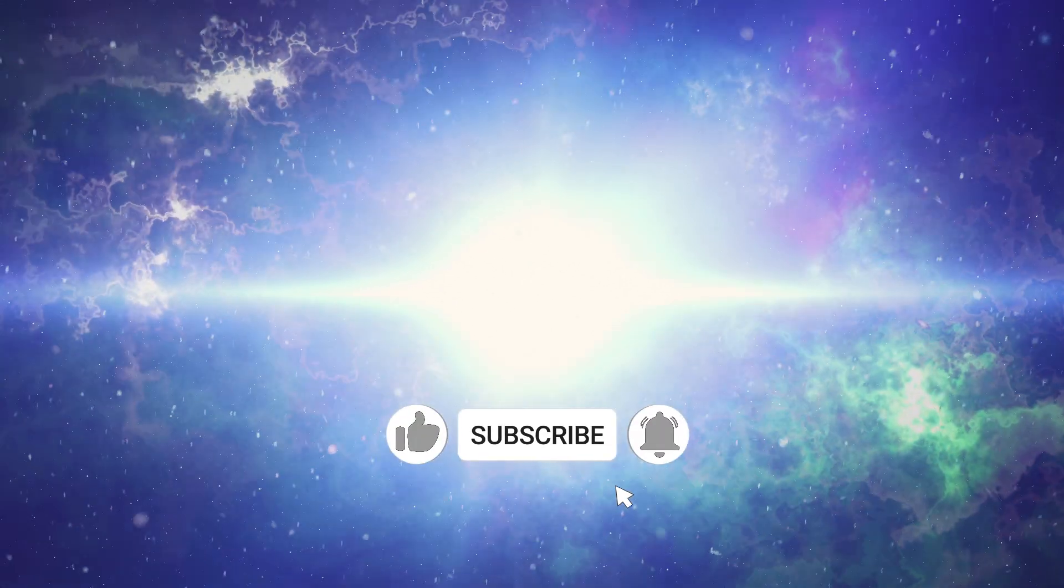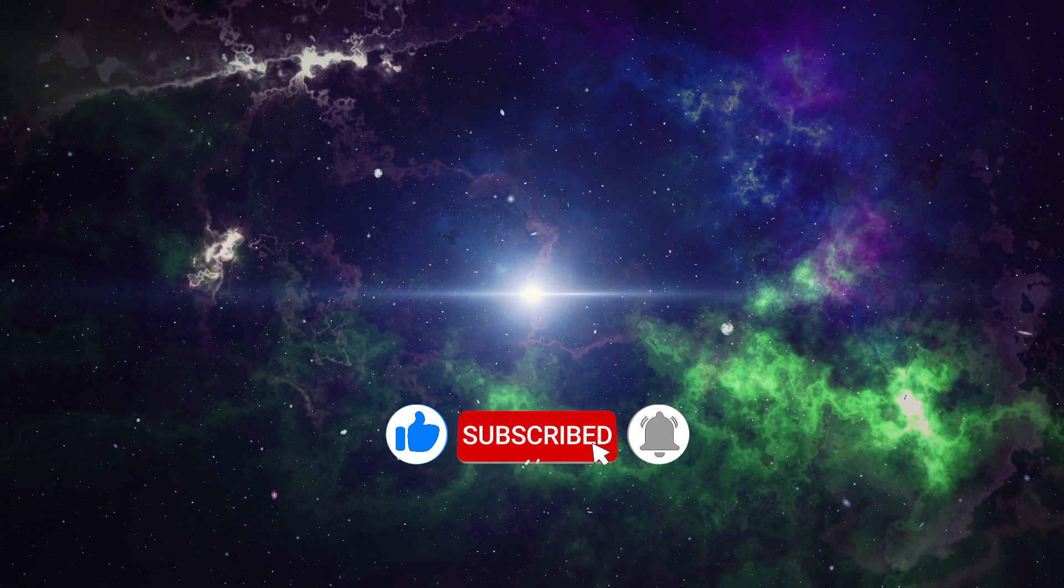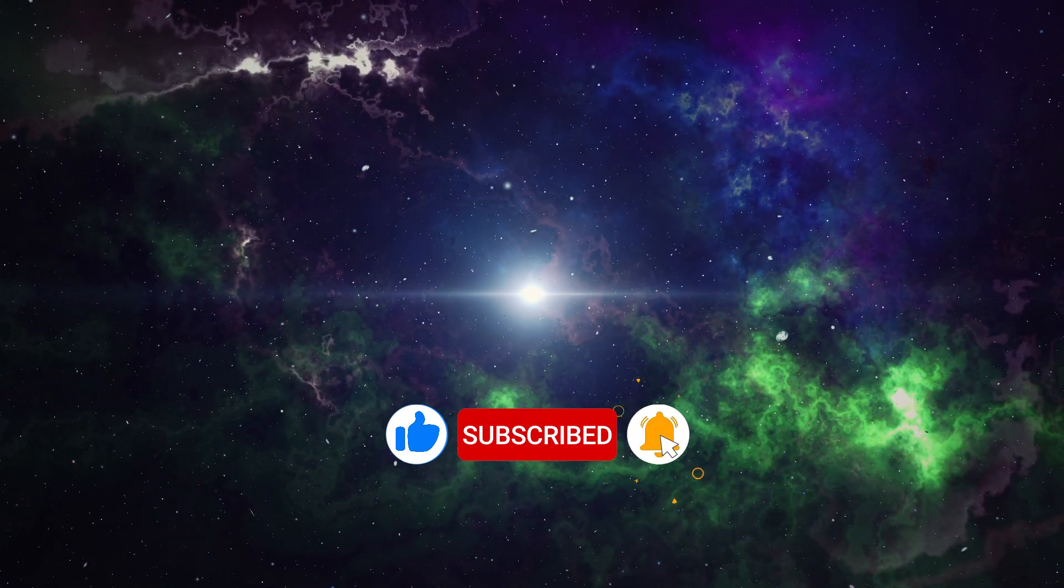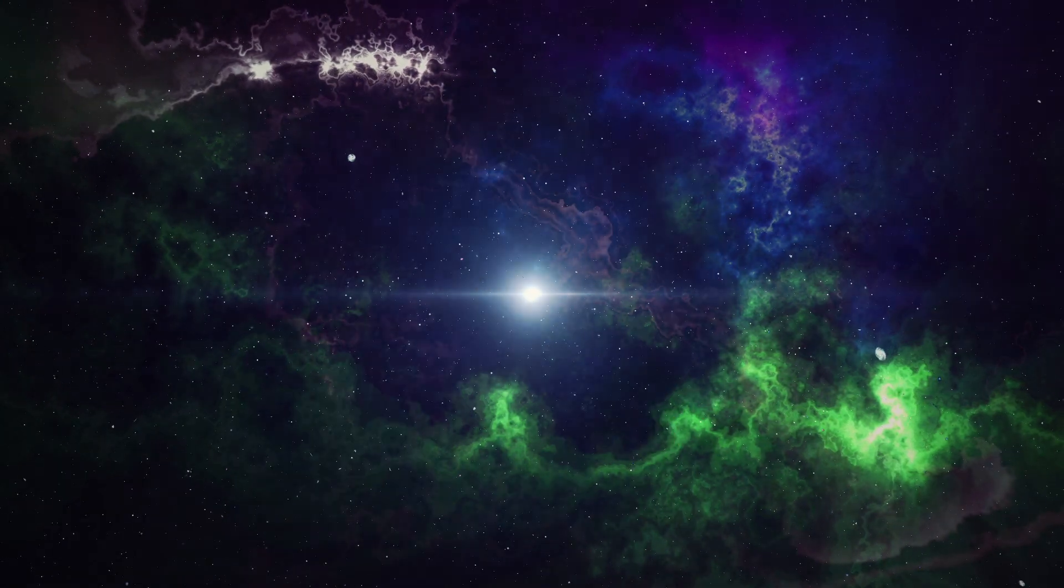In the aftermath of the Big Bang, the universe was a seething cauldron of photons, electrons, and protons, with tiny ripples of density scattered throughout. As the universe cooled and expanded, areas with a slightly higher concentration of mass began to exert a stronger gravitational pull.